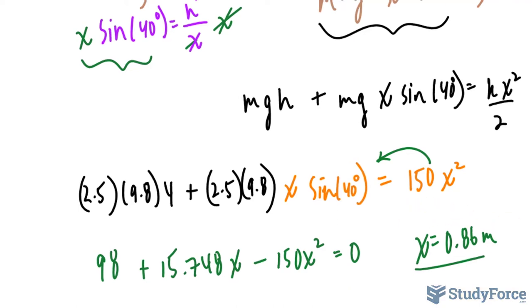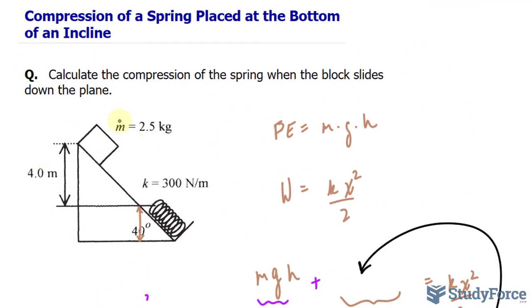Therefore, given the configuration shown in this illustration, this spring will compress 0.86 meters.